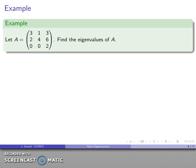So for example let's take the matrix 3 1 3 2 4 6 0 0 2, let's find the eigenvalues of A.